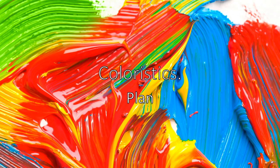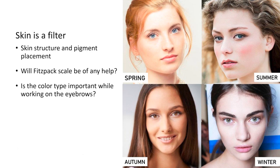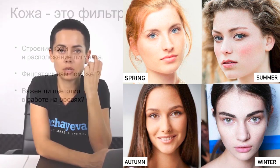We'll mainly talk about eyebrows, about color theory applied to eyebrows. It's really difficult to determine which color type you're looking at because many people change their hair color and put on the wrong makeup. The wrong color type is really important in decorative cosmetics and in choosing clothes that emphasize the beauty of the skin.